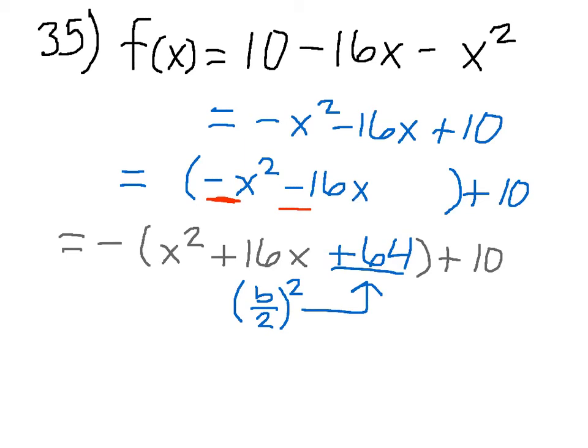since that's landing on the inner layer here, subject to this negative sign out front, I've really subtracted 64 from this side of the equation. So I need to add it back out here to keep it balanced.